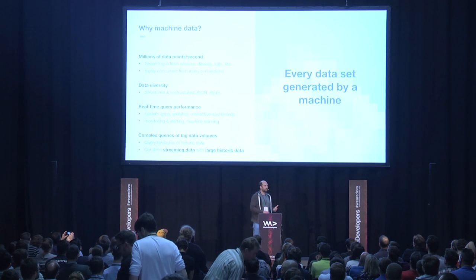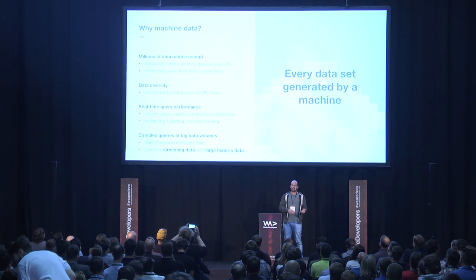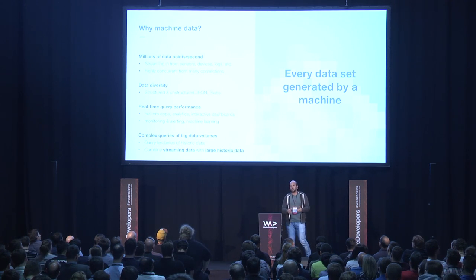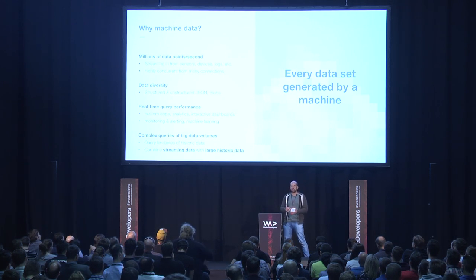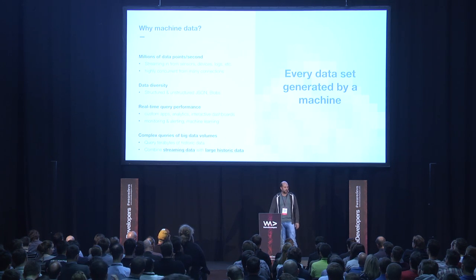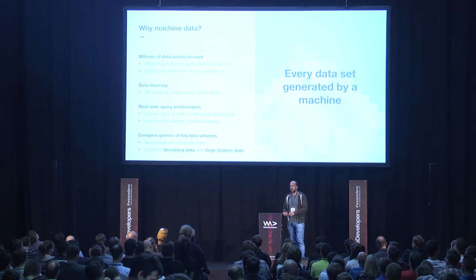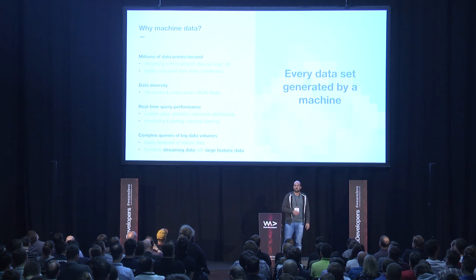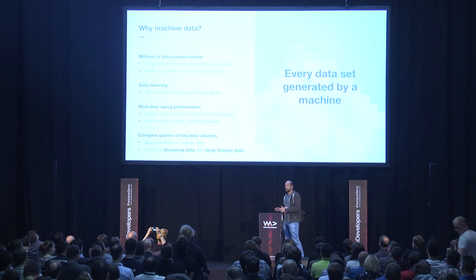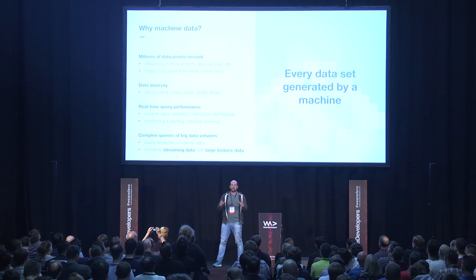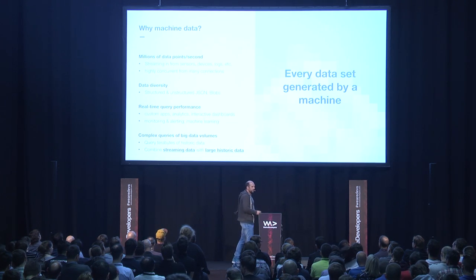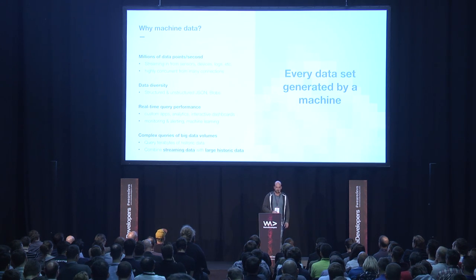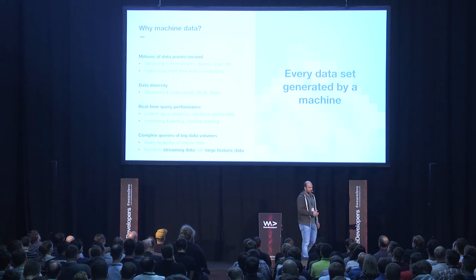So why machine data? We have millions of data points per second generated all over the world — in production lines, assembly lines. We even have one customer who creates boxes where they measure sensors and are able to measure up to a hundred thousand records per second. Data is diverse; we have different sensor types and different types of data. Still, people want more and more real-time performance. They want to do analytics immediately. They're talking about predictive maintenance — people want to know when their machine is stopping because it costs a huge amount of money. They want to do things like monitoring, alerting, and machine learning to take immediate actions. This means quite complex queries on big data volumes.